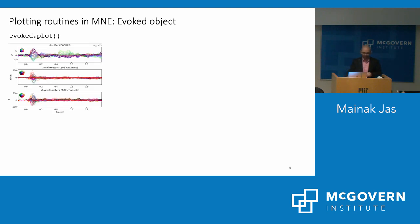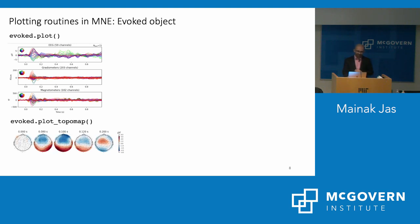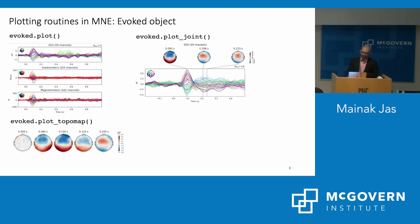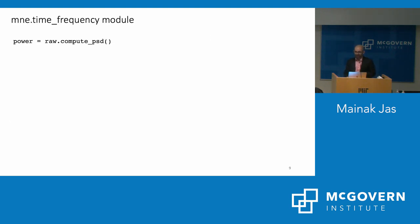Butterfly plots show average time courses with color indicating sensor location. To look at the topography at a specific time point, use evoked.plot_topomap(); to see time courses and topographies together, use evoked.plot_joint(). For frequency domain analysis, you do raw.compute_psd() to compute power spectral density — this works equally on epochs and evoked objects. You can then call plot_topomap() to get the topography of different frequency bands. For time-frequency analysis showing how frequencies evolve over time, you can use wavelets such as Morlet.